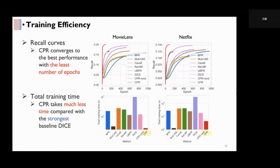Now we compare the training efficiency of CPR with other methods. First, we show the recall curves of CPR and all the baselines. The red line is CPR. It converges to the best performance with the least number of epochs.